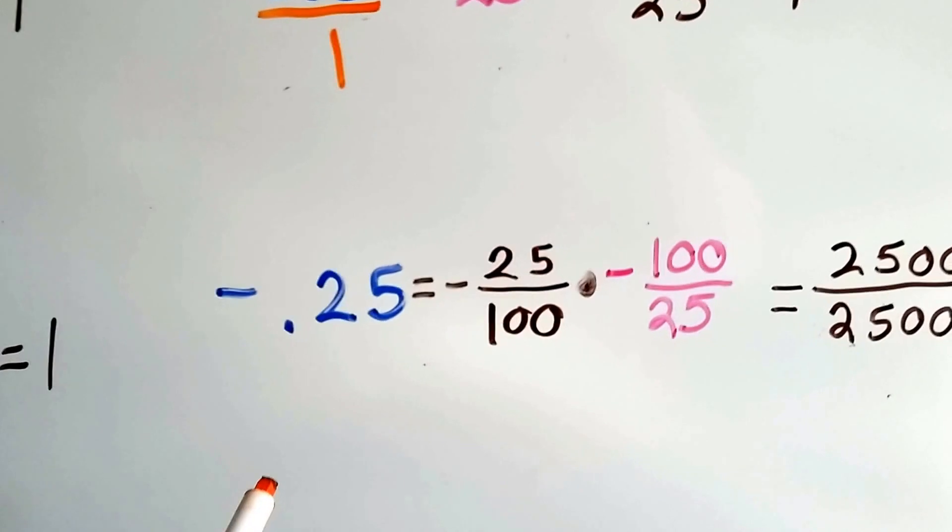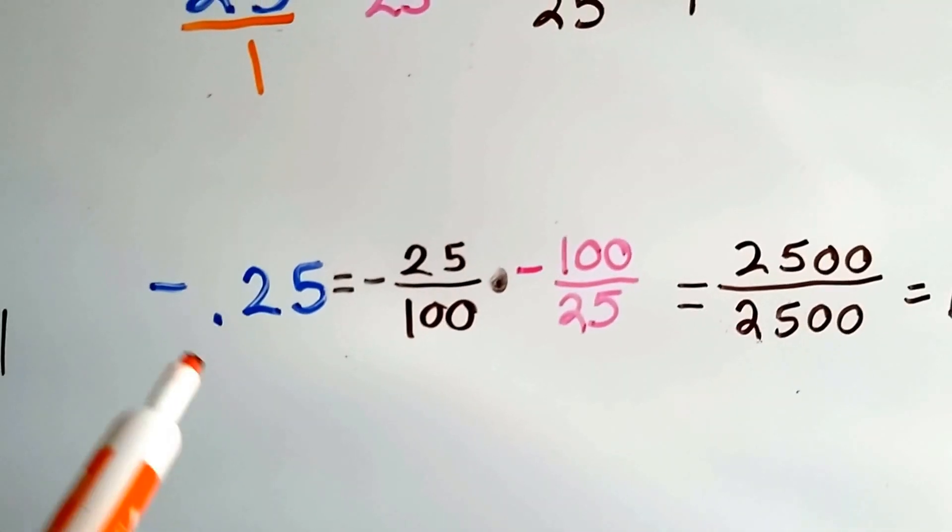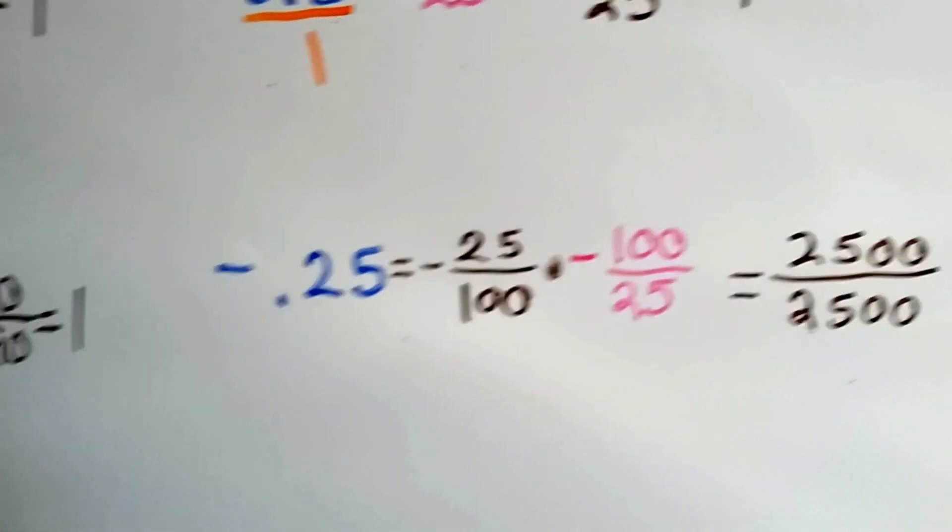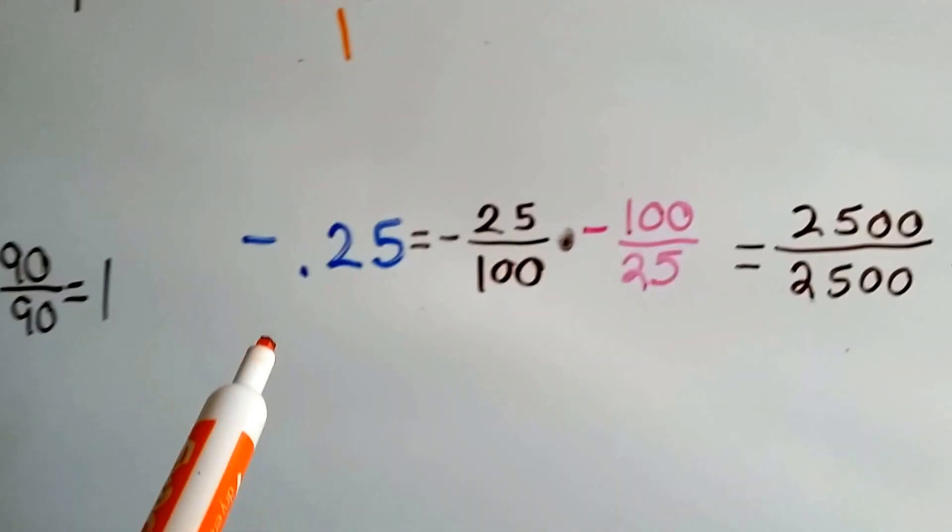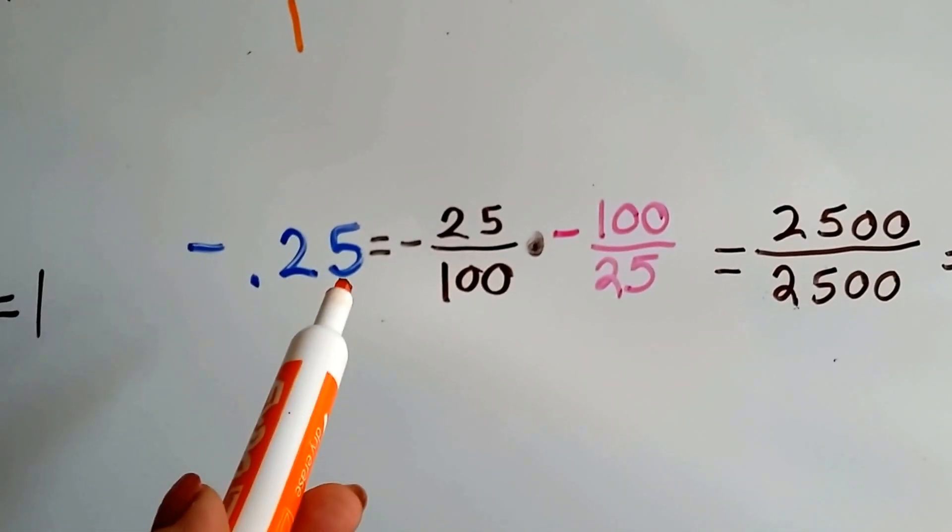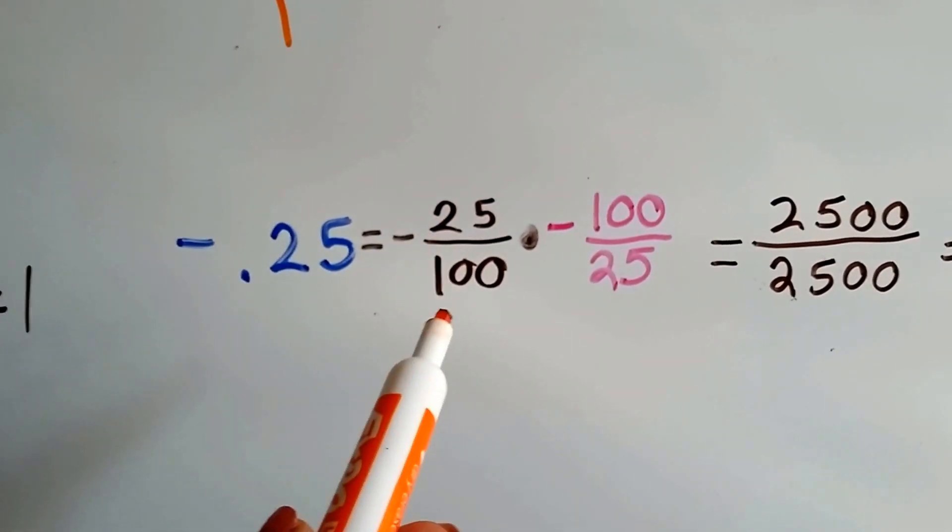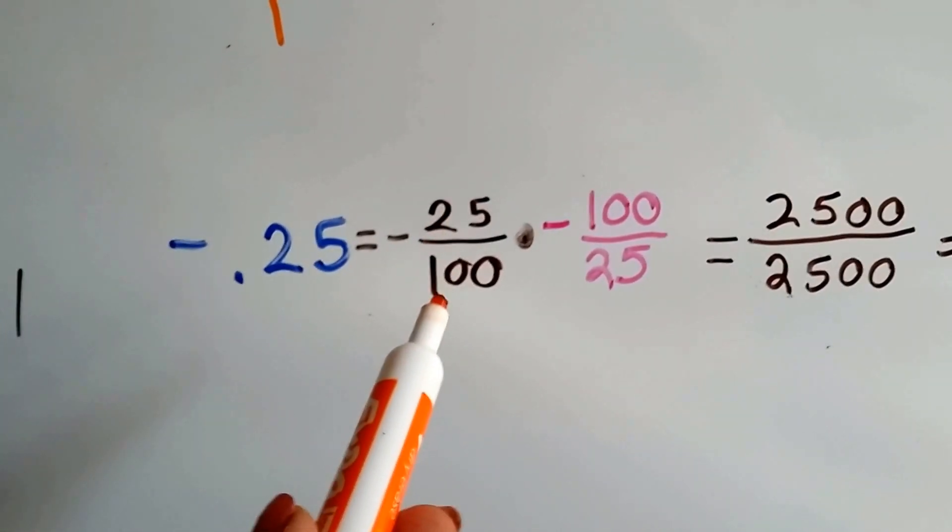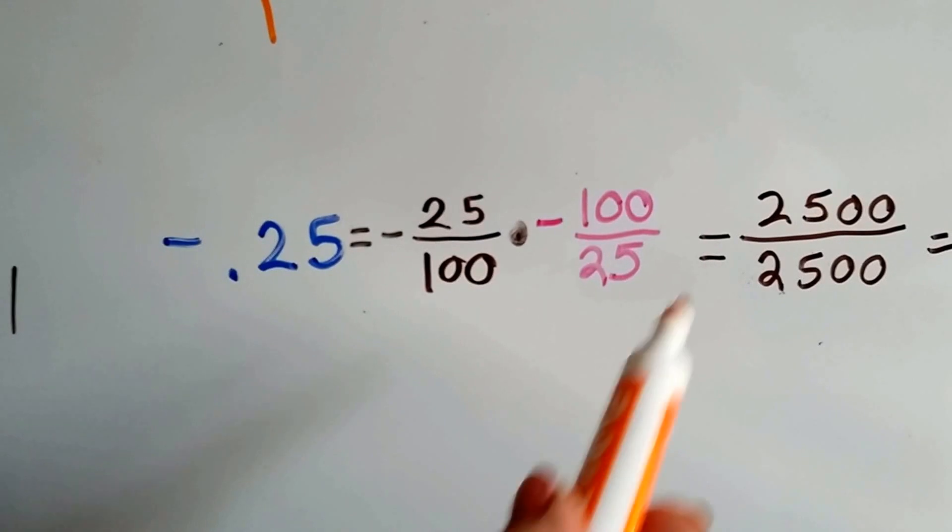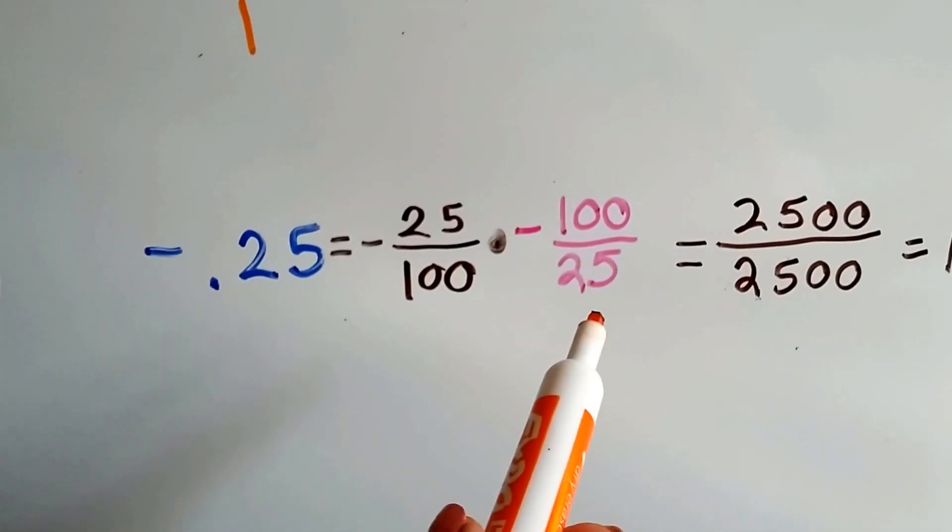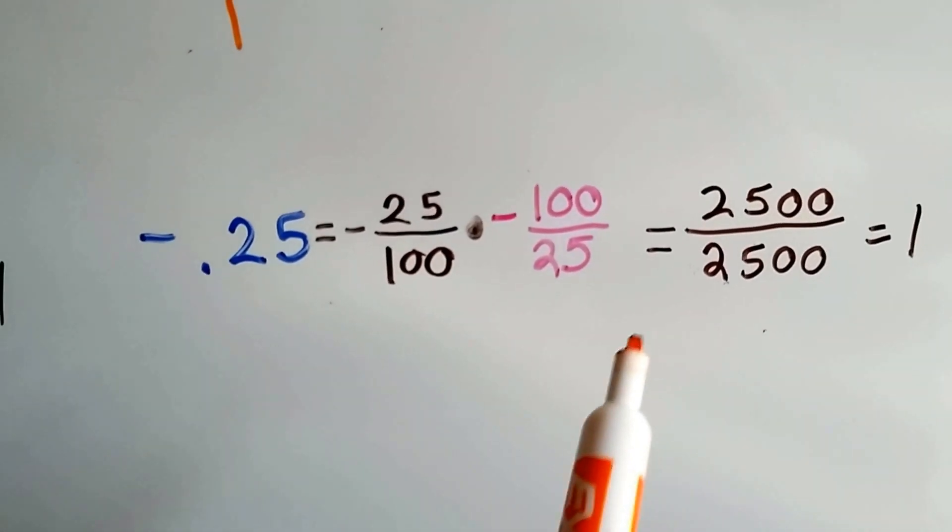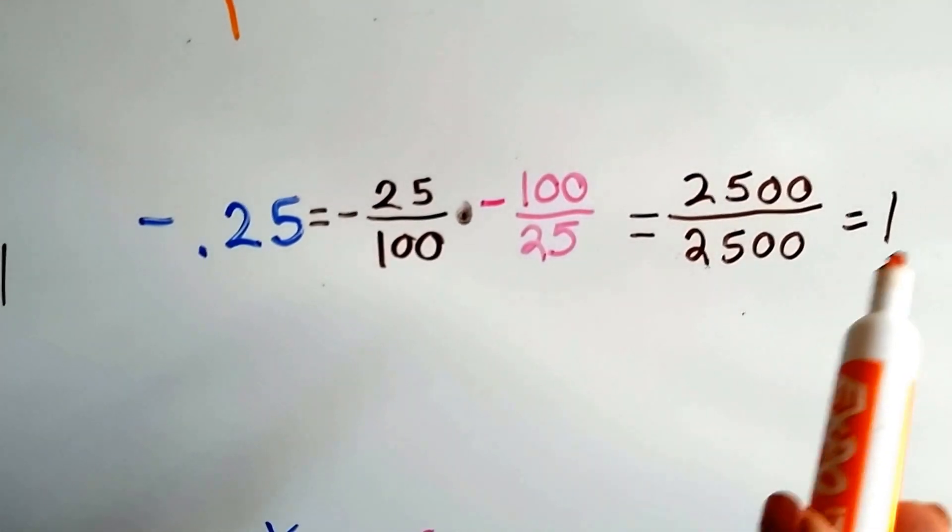What if we got a negative decimal? Same thing. We do the same thing we did with the positive decimal. This is in the tenths place. That's the hundredths place. So .25 is 25 one hundredths. We have negative 25 one hundredths as a fraction. Its reciprocal is just flipped around. Negative 100 over 25. If we multiply them straight across, we get 2500 over 2500. That equals 1.